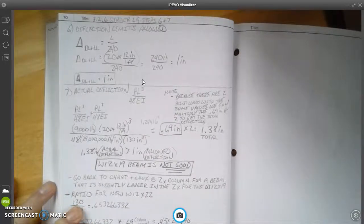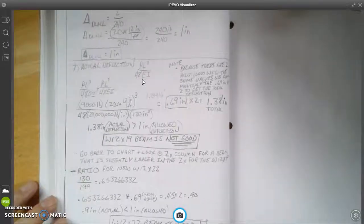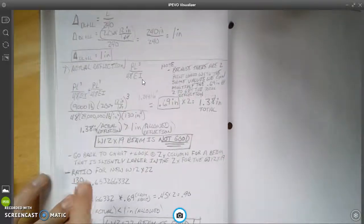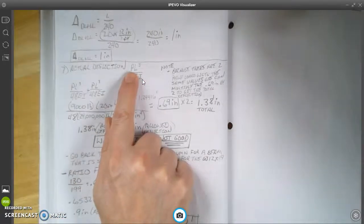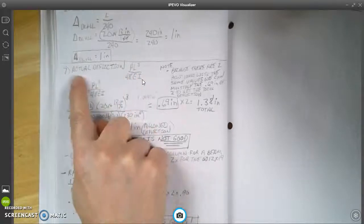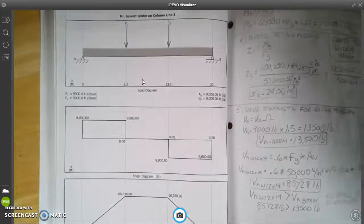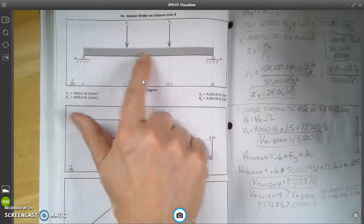Over here, this is steps number 6 and 7: that's the deflection limits and the actual deflection. What you'll notice is that when I do this calculation, this has a little different formula here than what it did for the beam. When you have points, and that's what this one is back here, this is point load on girders.